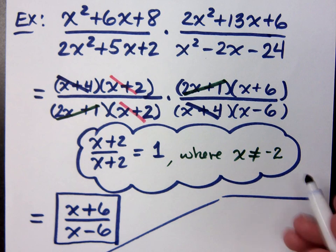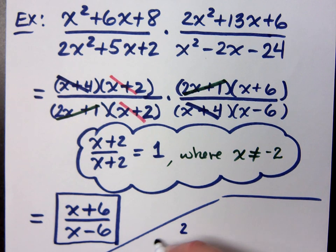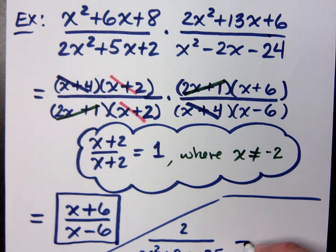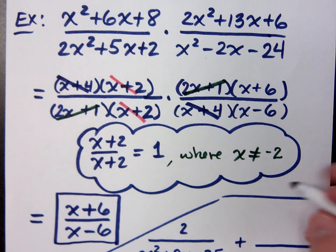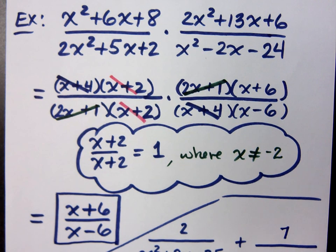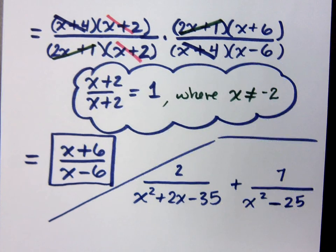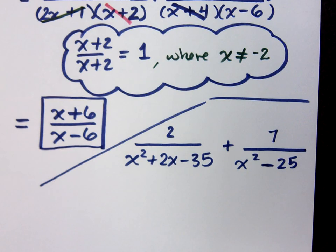What if I ask you to do this? 2 over x squared plus 2x minus 35 plus 7 over x squared minus 25. It's not the same thing. Oh, no. Plus, right? This is addition now.